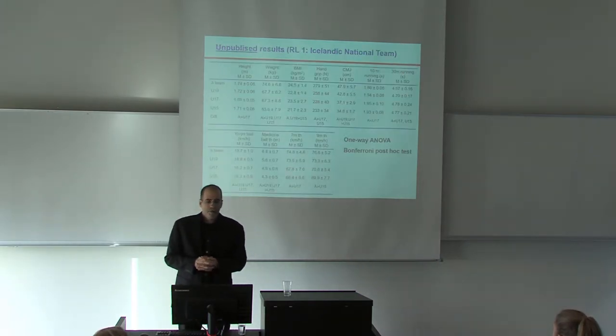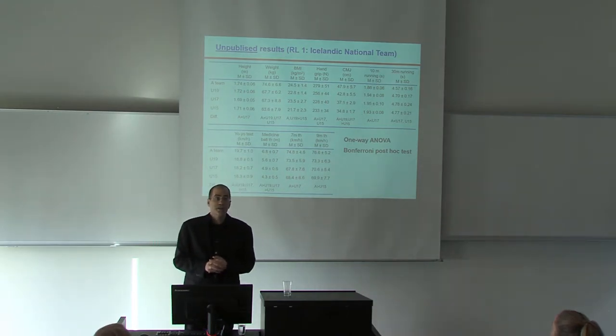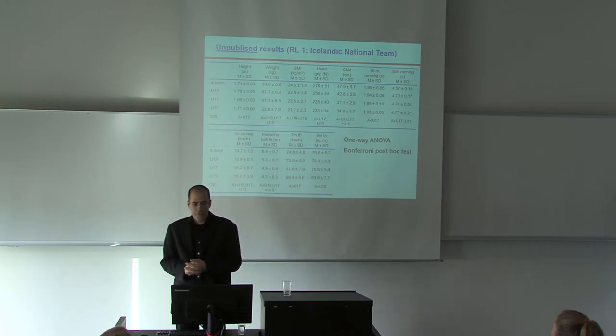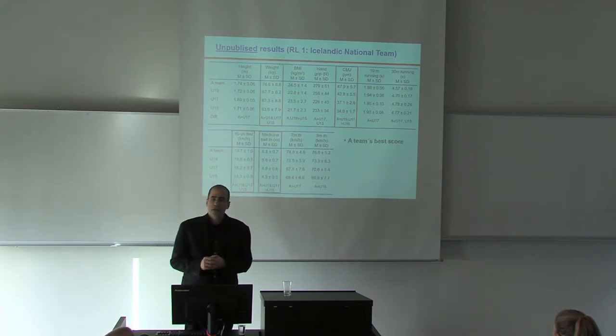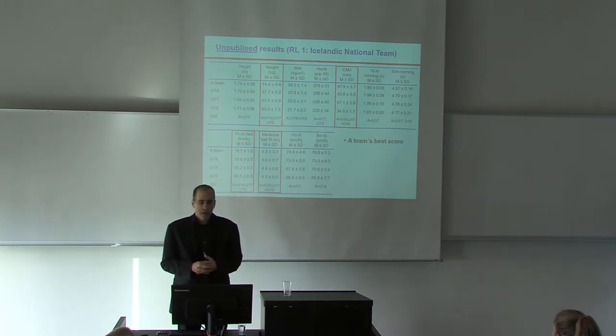Some first published results in this study, we evaluated 18, under 19, 17, and 15 in female, and we did one-way ANOVA with Bonferroni Post-hoc. And of course, the 18 achieved the best score in each variable, but mainly in weight, counter-movement jump, yo-yo test, and medicine ball.